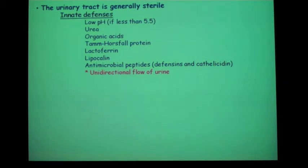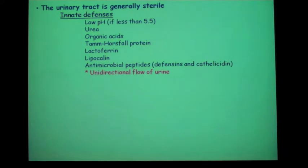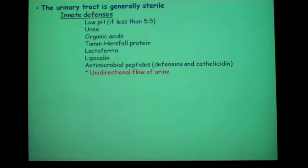Urine is actually a very good growth media, but the urinary tract is sterile because in vivo there are many host defenses. For example, urine pH below 5.5 eliminates many bacteria. Tamm-Horsfall protein acts like a slime in the urinary tract and keeps pathogens from adhering to epithelial cells. Lactoferrin chelates iron so organisms don't have iron to grow, and can also be bactericidal. Many antimicrobial peptides are brought in during infection. Probably the most important defense is that urine flows unidirectionally, which washes out the urinary tract and keeps the pathogen load low.